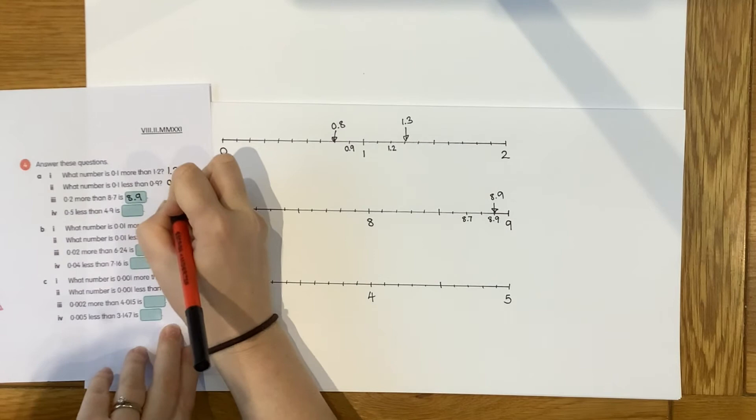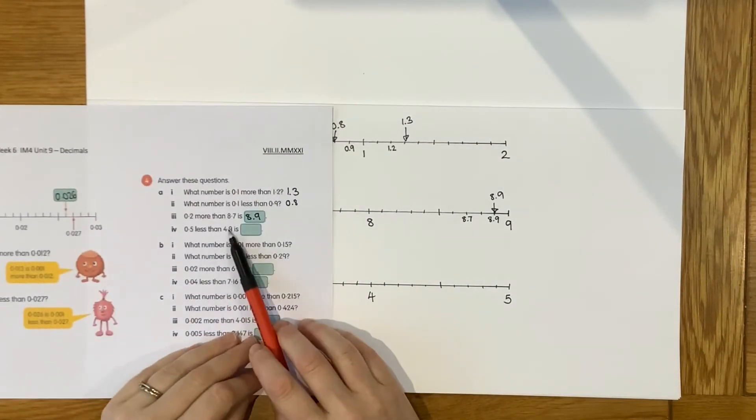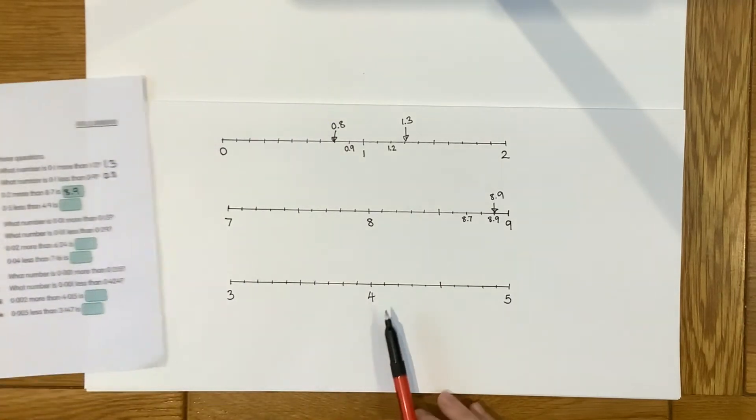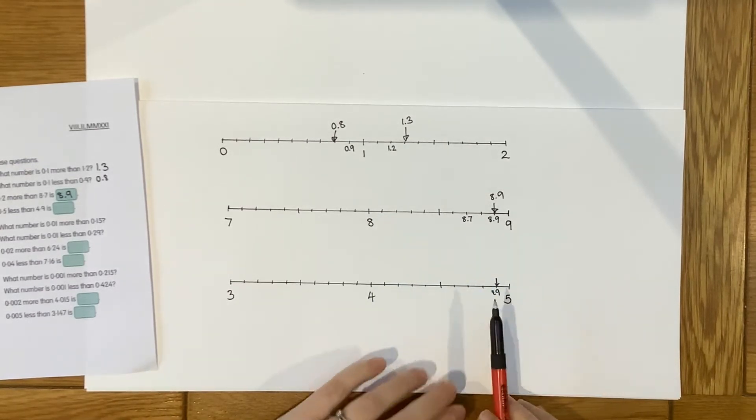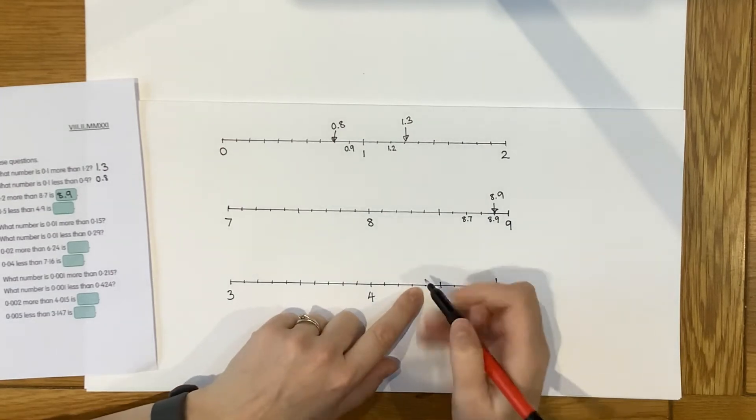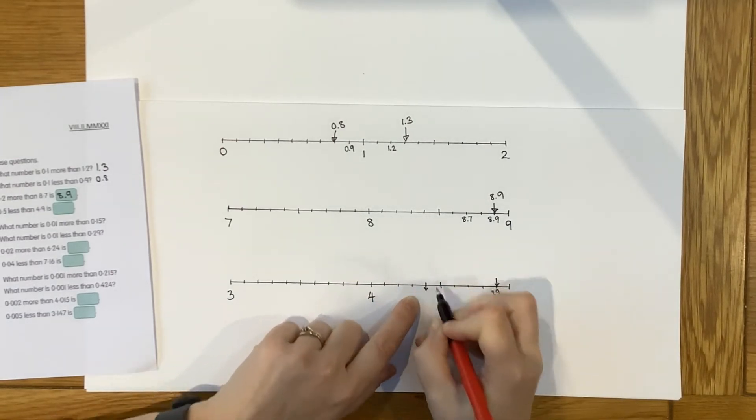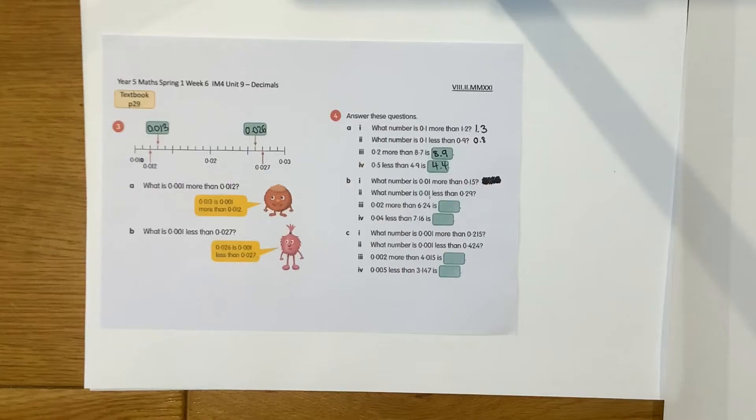Just put that in there. And then number 4, 0.5 less than 4.9. So let's find 4.9 first. Here's 4.9. And then 0.5 less than, so I'm going 5 tenths back along the number line. 1, 2, 3, 4, 5. Is going to be here, which is 4.1, 4.2, 4.3, 4.4.